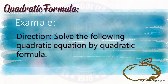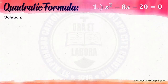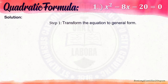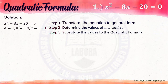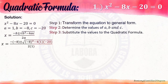More examples. Example number 1: x squared minus 8x minus 20 equals 0. Step 1: The given equation is already in general form. Step 2: a is 1, b is negative 8, c is negative 20. Step 3: Substitute into the quadratic formula. x equals negative of negative 8, plus or minus square root of negative 8 squared minus 4 times 1 times negative 20, all over 2 times 1.